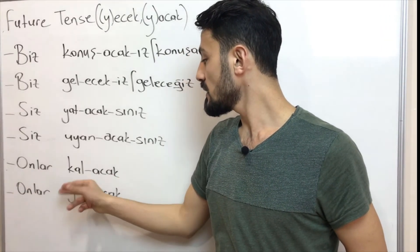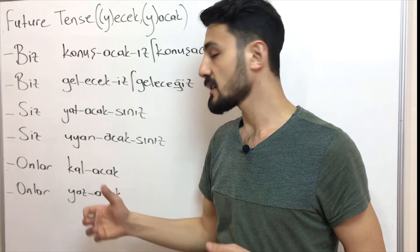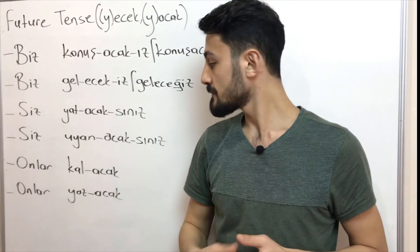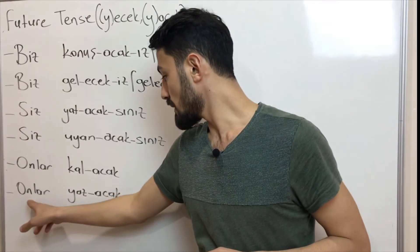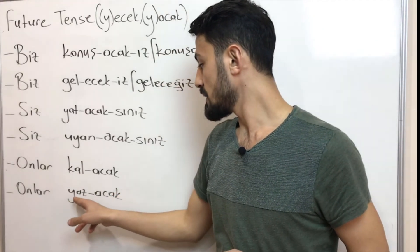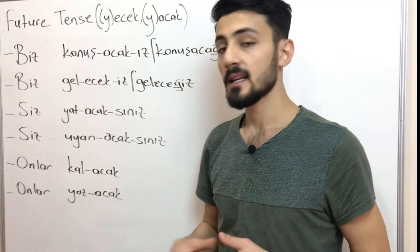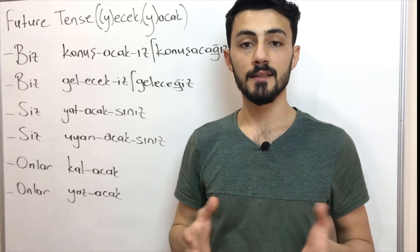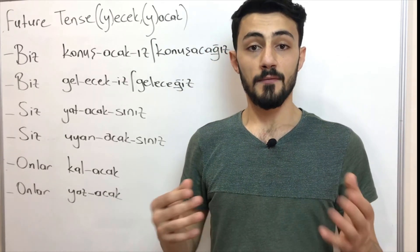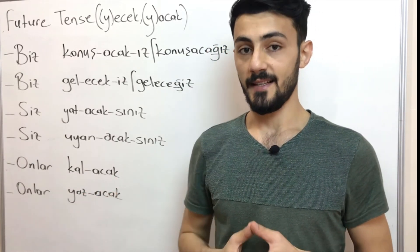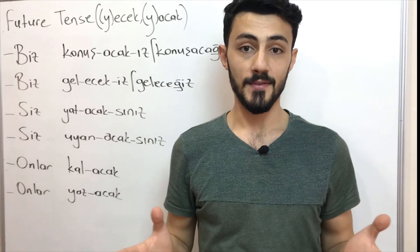Onlar kal-acak — they will stay. Onlar yaz-acak — they will write. That was the last example, and that's it for today. I hope you learned something.